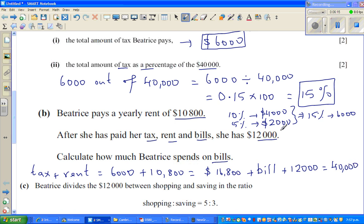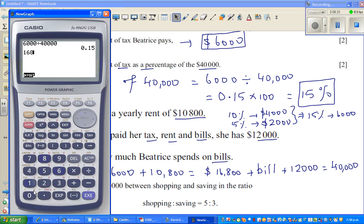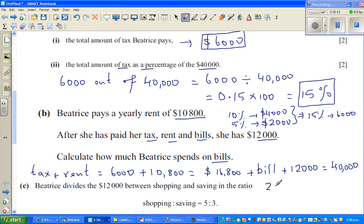Can you understand the equation? If this is what is left, tax plus rent plus bill plus the balance should give you $40,000. We can think in different ways. So $16,800 plus $12,000 is $28,800.